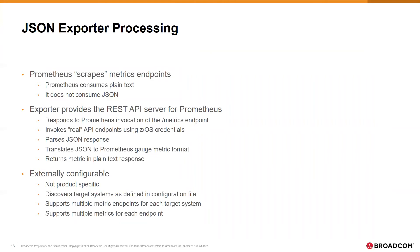As mentioned earlier, Prometheus doesn't process JSON, so we can't point it directly at our API. Instead, it calls our JSON exporter. When Prometheus invokes its metrics endpoint, the exporter invokes the IDMS REST API on ZOS and converts the JSON responses to plain text responses. Note that the exporter is not product-specific; the metrics collected are defined in an external configuration file. Our ZOS APIs are secured just like any other mainframe application, so the exporter provides the required mainframe credentials, which are specified in local environment variables.